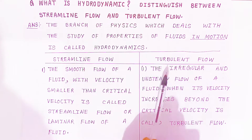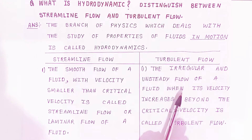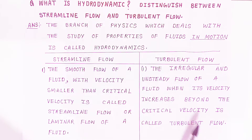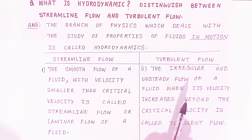Turbulent flow is the irregular and unsteady flow of fluid when its velocity increases beyond the critical velocity — that is called turbulent flow. It is an unsteady flow of fluid.